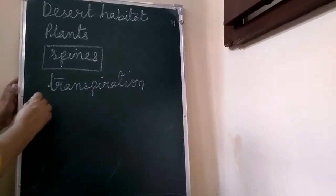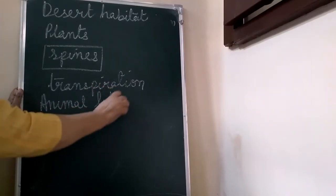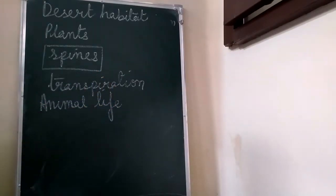Now, about the animal life. Many desert animals and insects survive the heat of the day by staying in burrows deep inside the sand during the day. They come out only at night when it is cool.